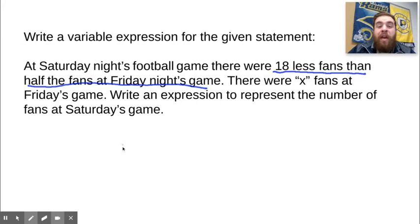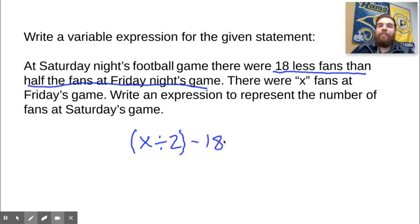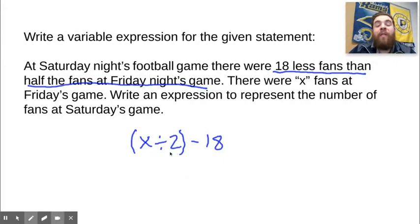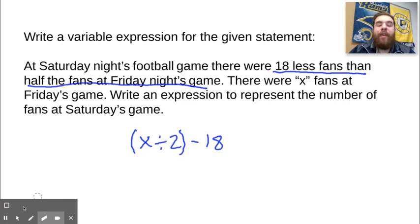So if we have Friday night's game, we need to use x to represent that. There were half as many there, so we need to find the half first, and then we would subtract that 18. We're finding half of x first and then subtracting 18. So we have to find half of how many were at Friday's game and then subtract 18 — that's how many people were at Saturday's game. Pat yourself on the back if you got that correct. If you didn't, I know it was a little tricky, but we need to start working more on these kinds of problems.